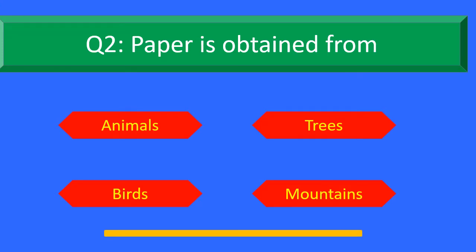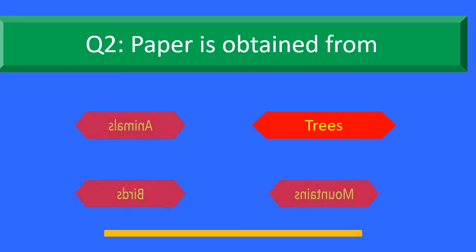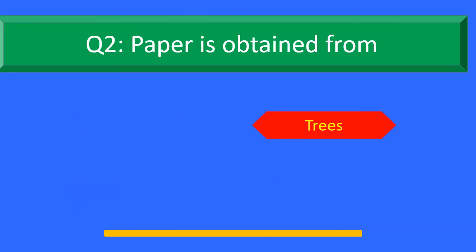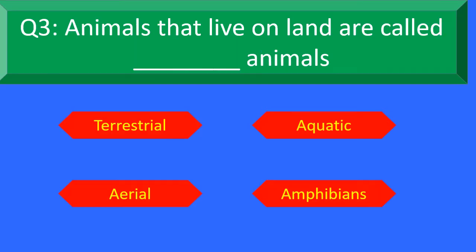The right answer is Option B: Trees. Paper is obtained from trees. Moving to Question number 3.